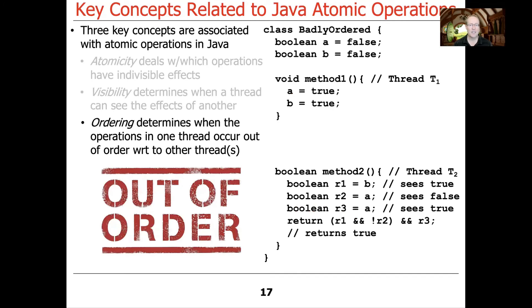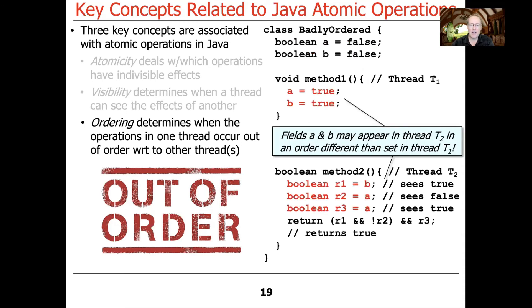And then the third topic is even more subtle, and this is really crazy when you're first exposed to it, because it doesn't match our intuition for sequential code at all. And this is what's called ordering, which determines when the operations in one thread occur out of order with respect to other threads. Here's an example I call badly ordered. So badly ordered defines two fields, a and b, that are both set to false, and then in thread T1, we're going to set a to true and b to true in that order. So you would think, a will get set first followed by b. Down here in method 2 in thread T2, we are going to read the contents of a and b.